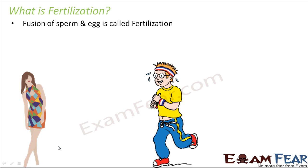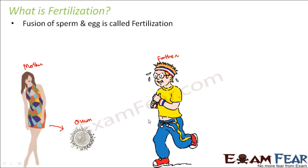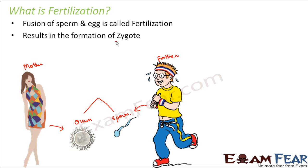In human beings, you have a male and a female. The female produces the egg cell, which is the ovum, and the male produces the sperm, which is the male gamete. During fertilization, the ovum and the sperm fuse together, and this fusion is called fertilization. When they fuse together, it results in the formation of a zygote. Zygote is a single cell structure — just one cell formed by the fusion of ovum and sperm.